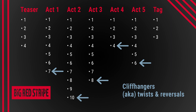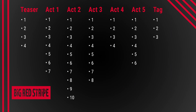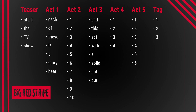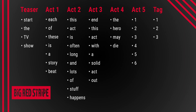To plan out those act breaks, you have to plan out the whole act, which means you have to plan out the whole story. Most TV shows only have 35 to 45 scenes, give or take, so you can't really wander around with your story. It's got to be clean, it's got to be tight, and you have to know where you're going.